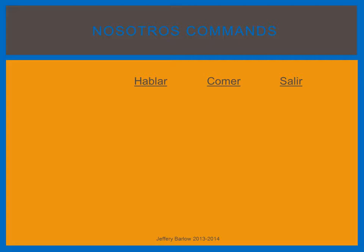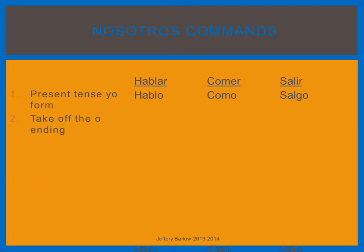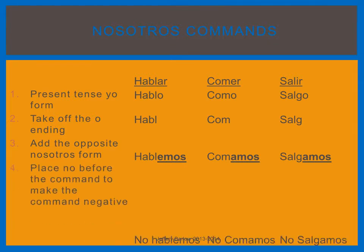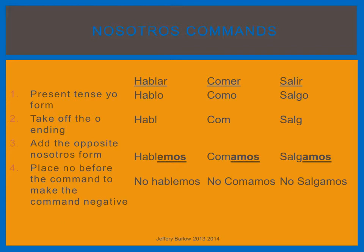The steps are the same as the negative tú familiar commands and the formal commands. The first step is to obtain the present tense yo form. The second step is to drop the O. The third step is to add the opposite nosotros ending. Hablamos with A-M-O-S means 'we speak'; hablemos means 'let's speak.' And the negatives are simple — you simply add a no before the command to say let's not talk, let's not eat, let's not leave.